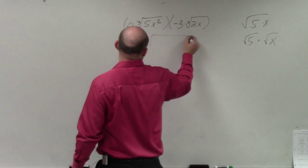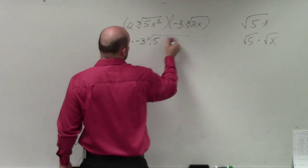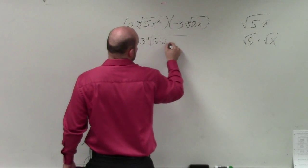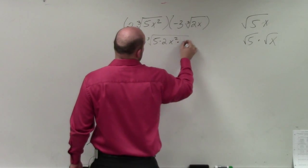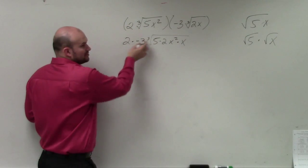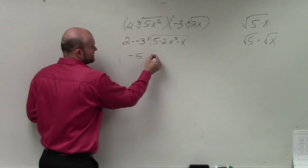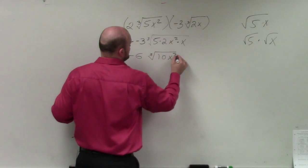So in reality, that's times the cube root of 5. You can only multiply 5 times 2, and then x squared times x. Well, 2 times negative 3 is negative 6 times the cube root of 10x cubed.